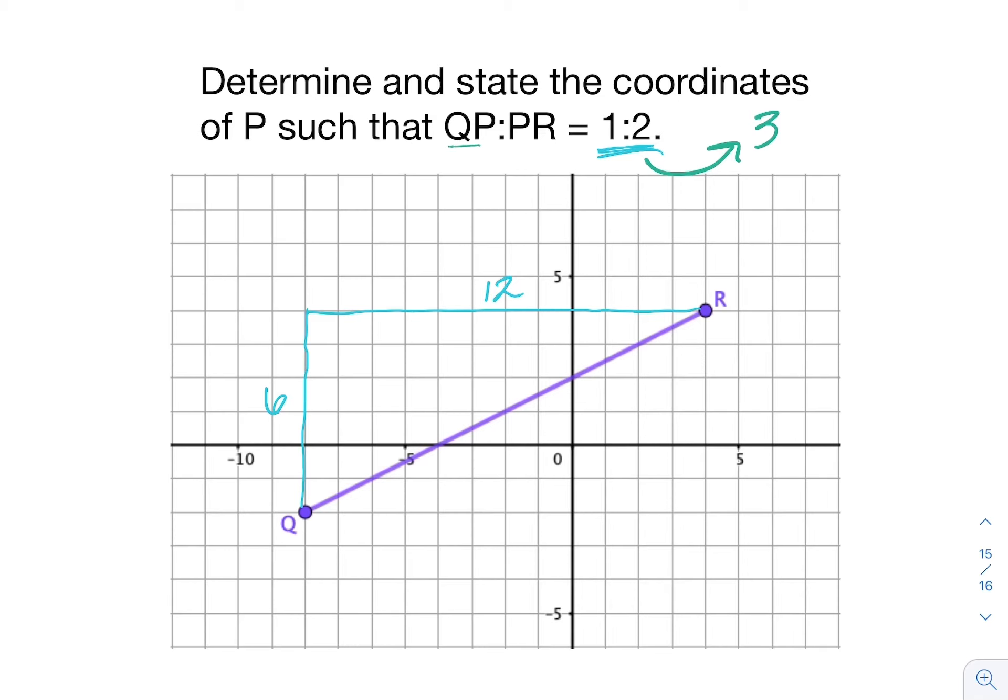One piece will be on the left between Q and P, and two of those three equal pieces will be on the right of point P, or between P and R. I'm going to take my vertical distance first, which is 6, and divide that by 3. 6 divided by 3 is 2, so my new vertical distance will be 2.